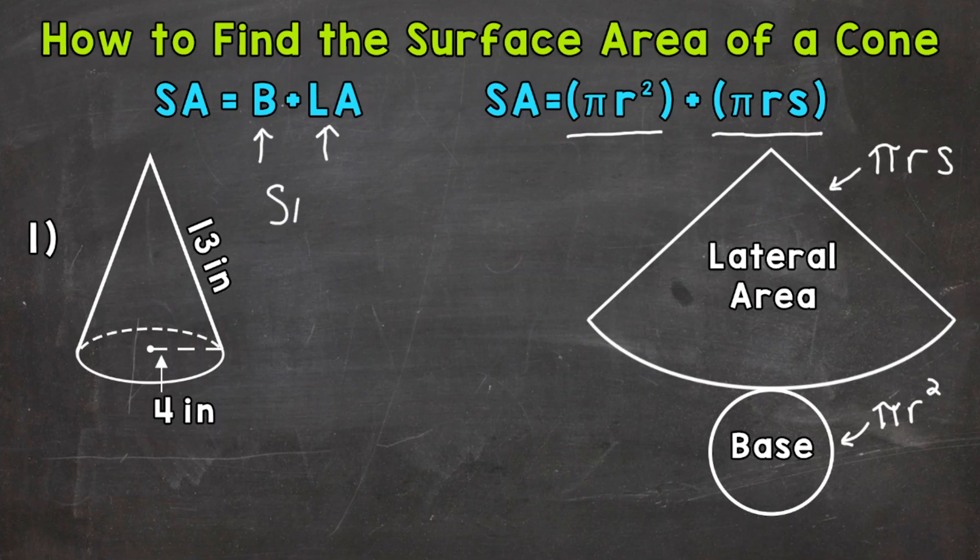So surface area equals pi r squared plus pi r s. Once we have that, we can plug in our radius and slant height.